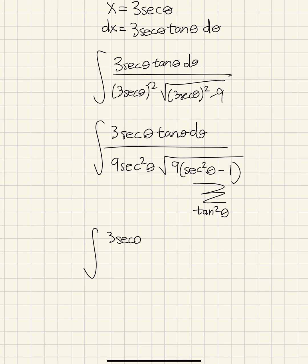3 secant theta tan theta d theta over 9 secant squared theta, square root of 9 tan squared theta. As we can know from this, we can square root everything. So we're going to rewrite it as 3 tan theta.